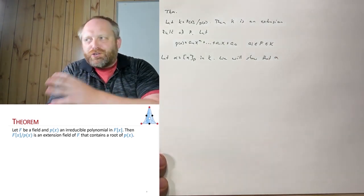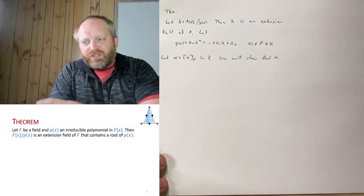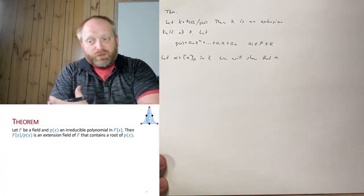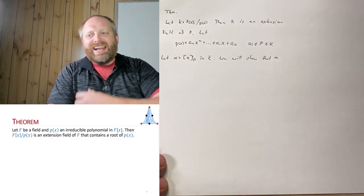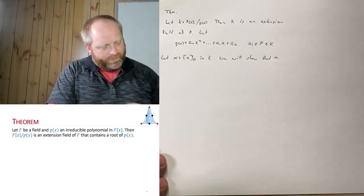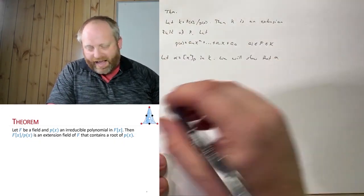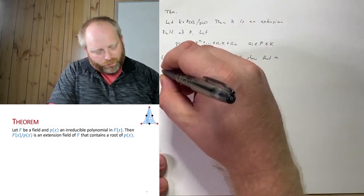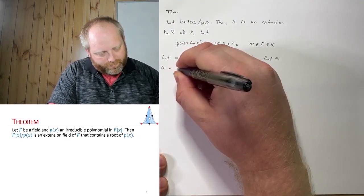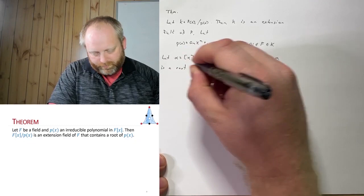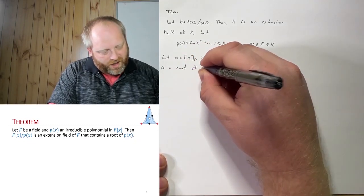p(x) was irreducible in the field we originally started with, but we're building this extension field. So we're going to be showing it is going to be reducible in this larger field. We're going to show that alpha is a root of p(x).